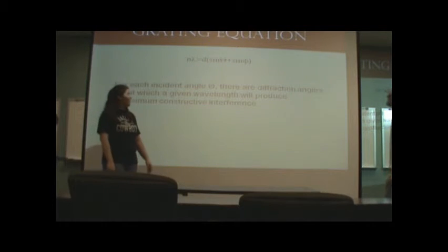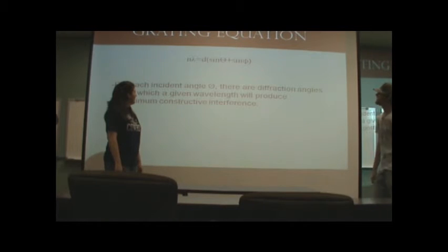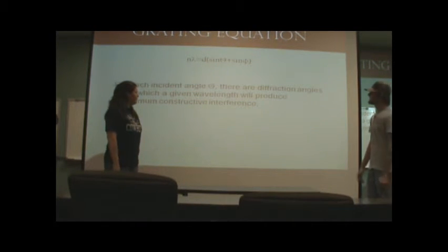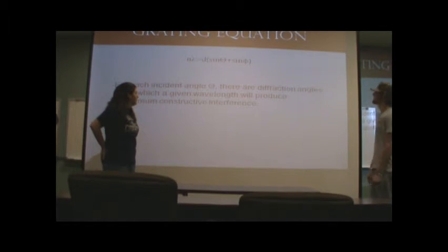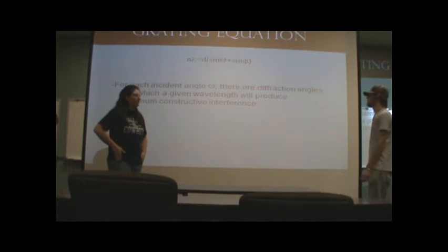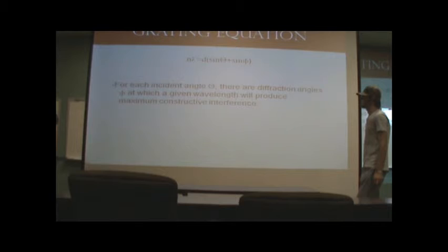The grading equation: N times lambda equals D sine theta plus sine phi. For each incident angle of theta, there are diffraction angles phi at which a given wavelength will produce maximum constructive interference. So at certain angles, you're going to get more constructive interference than at other angles. And that's the equation for it.